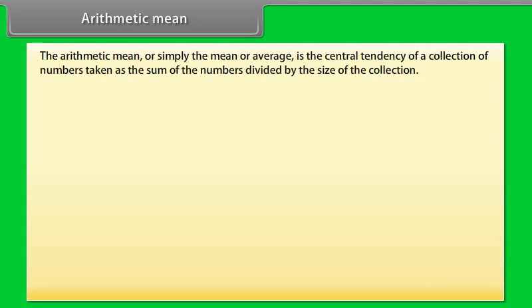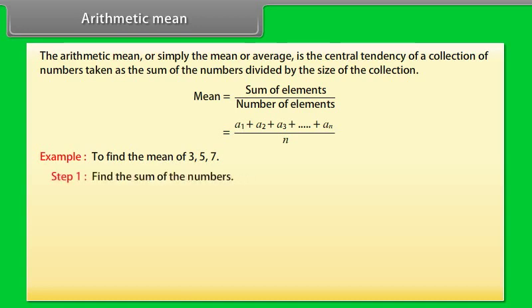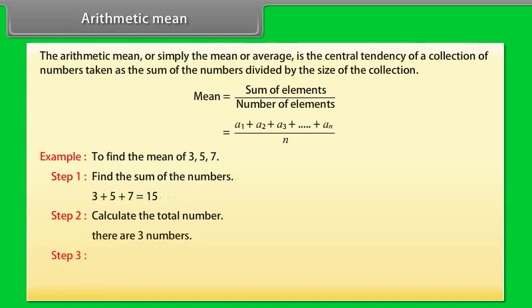Arithmetic Mean: The arithmetic mean, or simply the mean or average, is the central tendency of a collection of numbers taken as the sum of the numbers divided by the size of the collection. Mean = sum of elements / number of elements = (A1 + A2 + A3 + ... + AN) / N. Example: Find the mean of 3, 5, and 7. Step 1: Sum = 3 + 5 + 7 = 15. Step 2: Total numbers = 3. Step 3: Mean = 15/3 = 5.